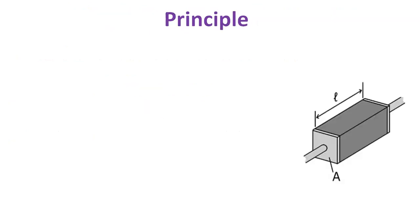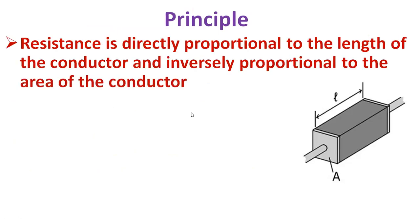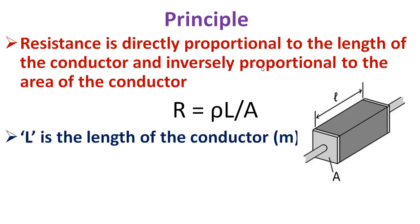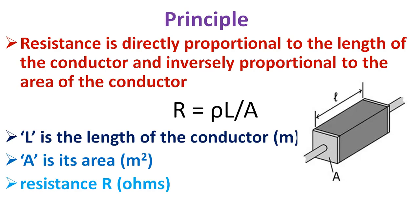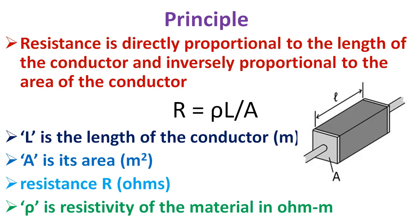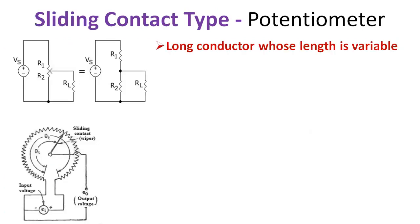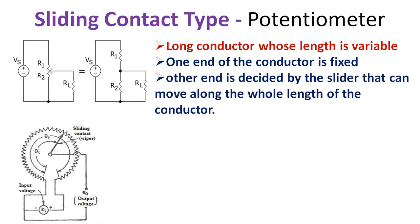The variable resistance transducer elements work on the principle that the resistance of the conductor is directly proportional to the length of the conductor and inversely proportional to the area of the conductor. Thus if L is the length of the conductor in meters and A is its area in square meters, then its resistance R is given by R = ρL/A, where ρ is the resistivity of the material measured in ohm-meters and is constant for a given material. Some of the most popular variable resistance transducers are sliding contact devices, in which the effective length is variable.